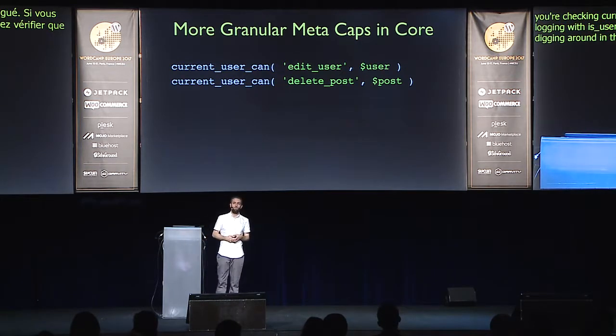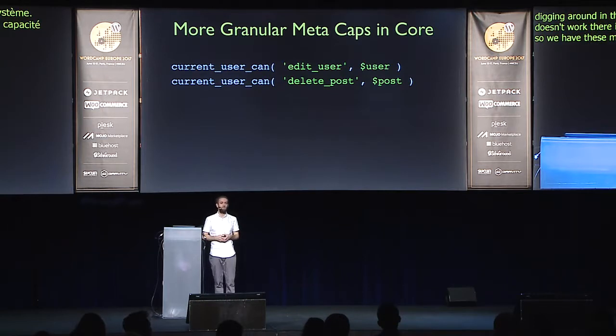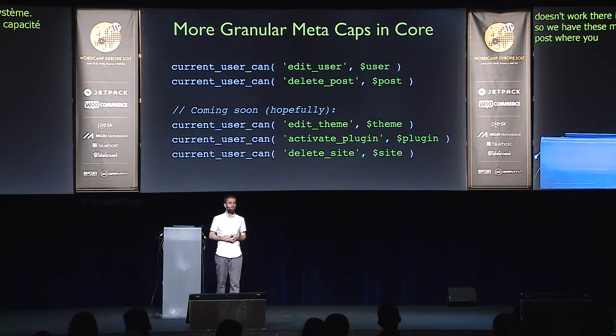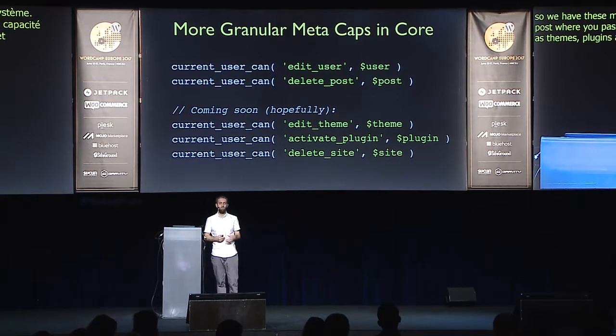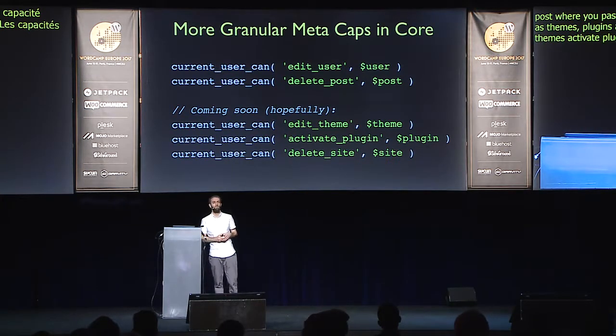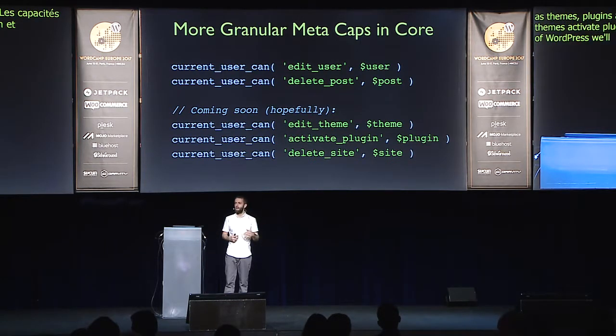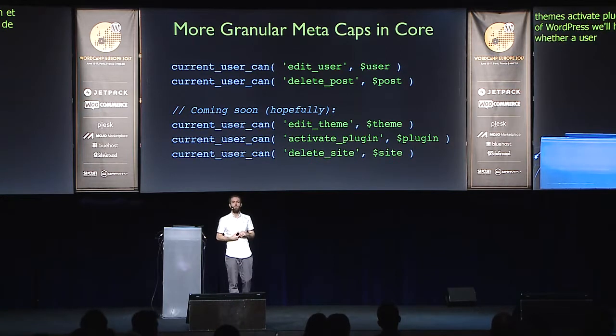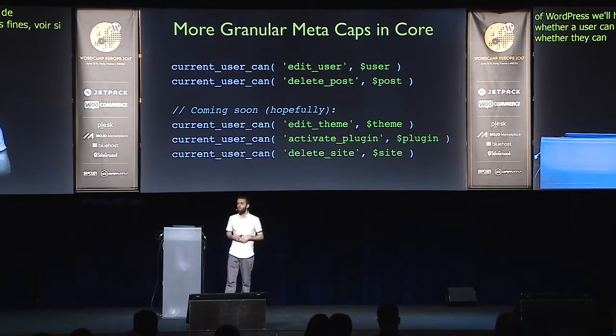There's a push in WordPress to introduce more granular capabilities. Currently we have meta capabilities like edit_user with a user ID or delete_post with a post ID, but you can't do this for things like themes, plugins, and sites — those capabilities are more generic: edit_themes, activate_plugins, deactivate_plugins. Hopefully in a future version of WordPress we'll be able to control whether a user can activate or deactivate individual plugins by name, or archive, delete, or restore sites on a network by site ID. We managed to introduce more granular capabilities for taxonomy terms back in WordPress 4.7. Hopefully widgets, sidebars, menus, and comments will get much more granular control too.